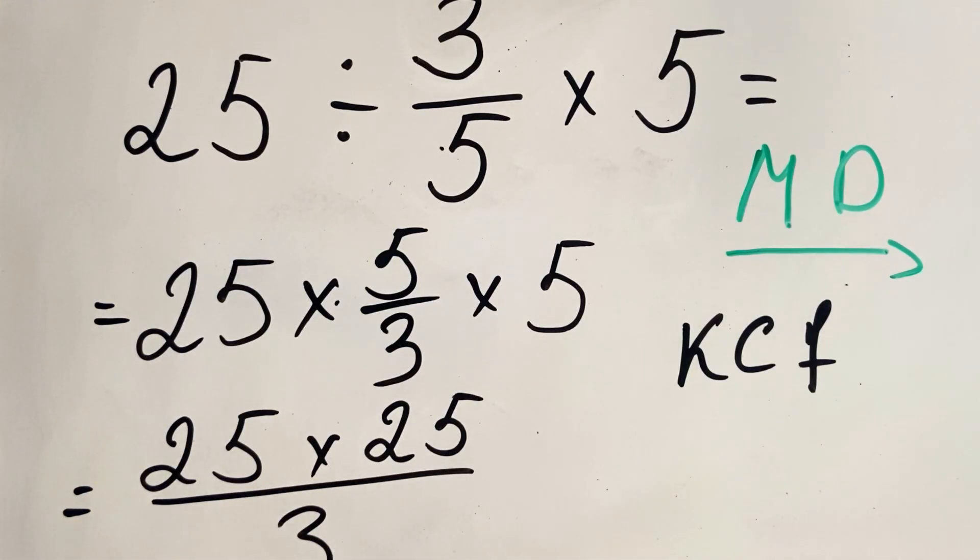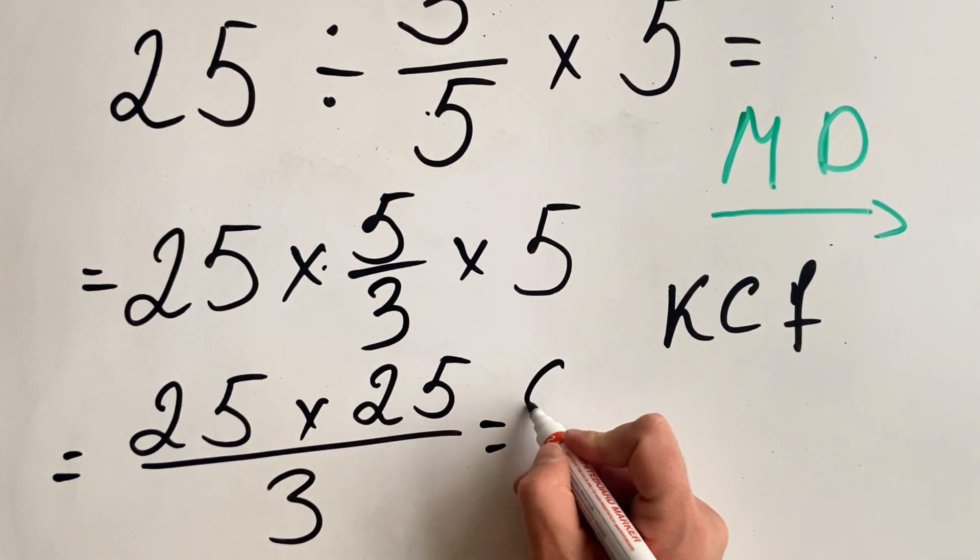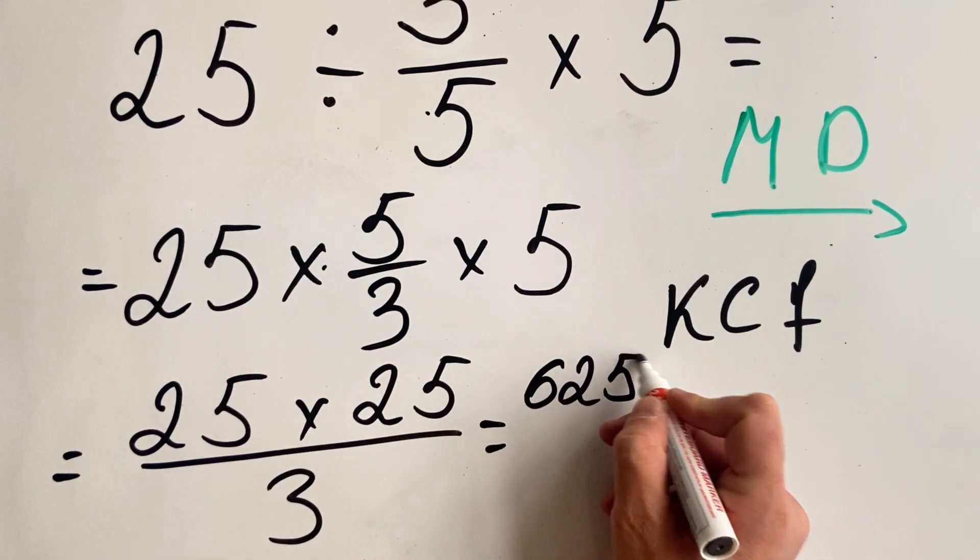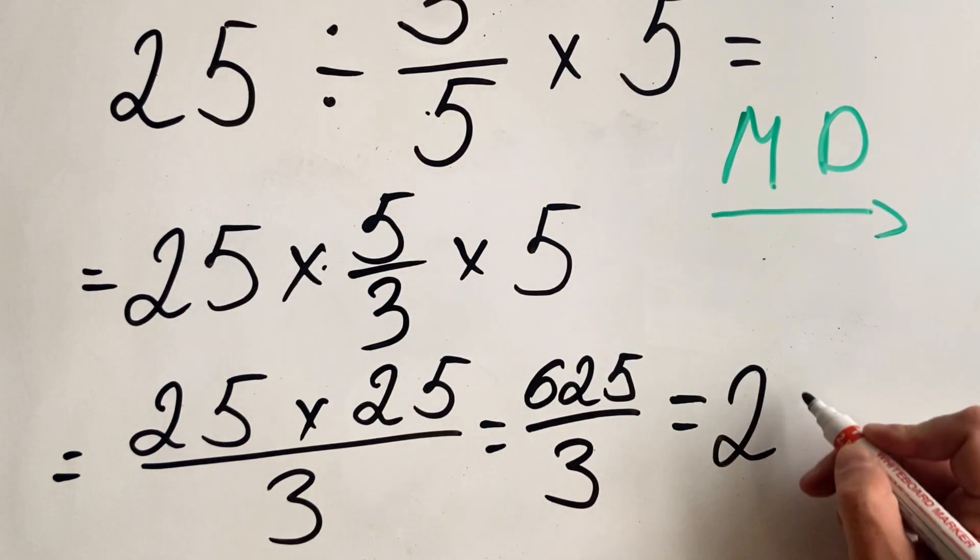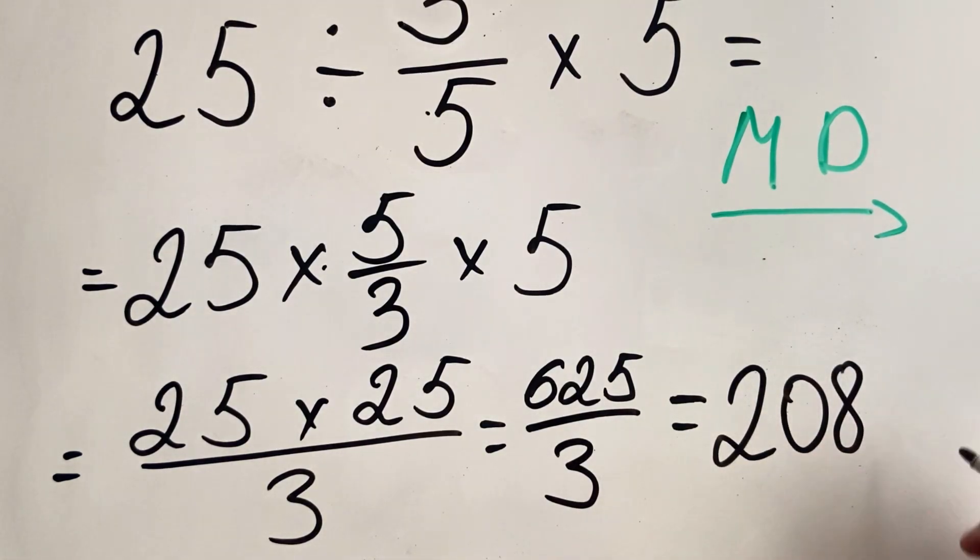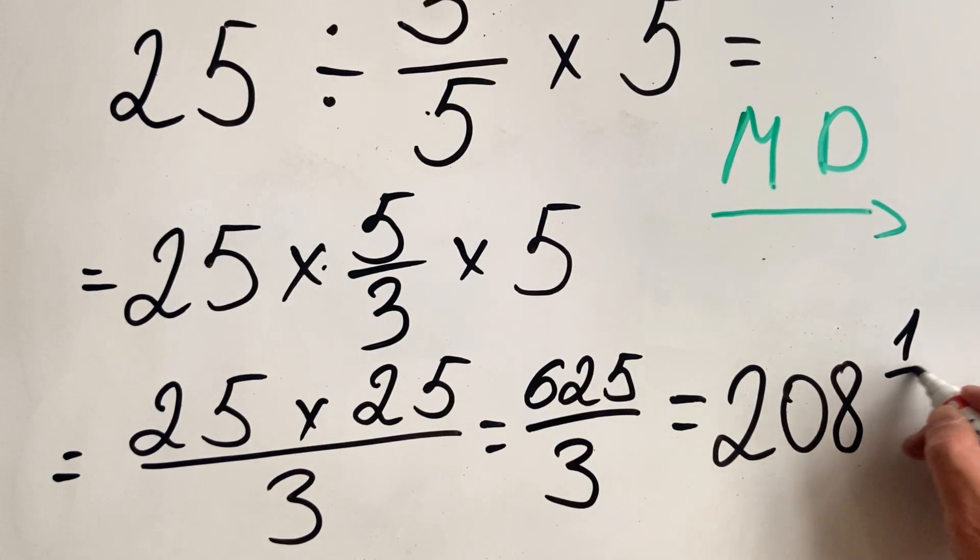Here we have 25 squared, which is 625 over 3, which equals 208 and 1 third.